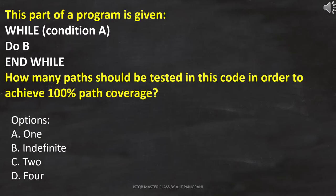Here the question is, this part of a program is given: while condition A, do B, end while. And then these options are provided.